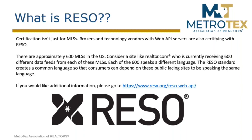In these data feeds, we are using different terms to describe the same piece of information about a property. The RESO standard puts all the MLSs on the same page so that whenever technology partners receive this information, they don't have to jump through tons of hoops to normalize the data so it can be translated into a product that's usable by them.